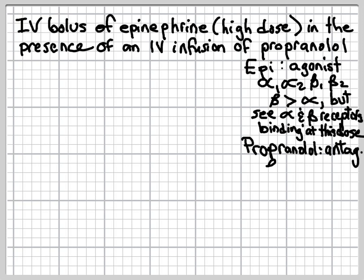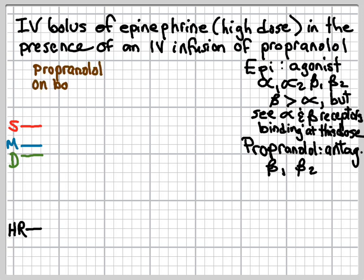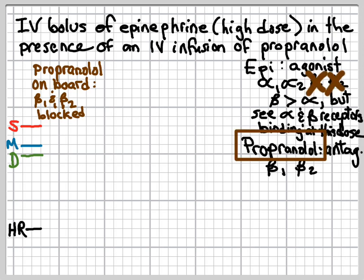Propranolol is a beta-1, beta-2 non-selective adrenoceptor antagonist. So now let's draw out the diastolic, systolic, mean arterial pressure, and heart rate. We're going to look at the effect of epinephrine when propranolol is on board. Propranolol is a beta-1, beta-2 receptor antagonist, so both of these receptors are going to be blocked.